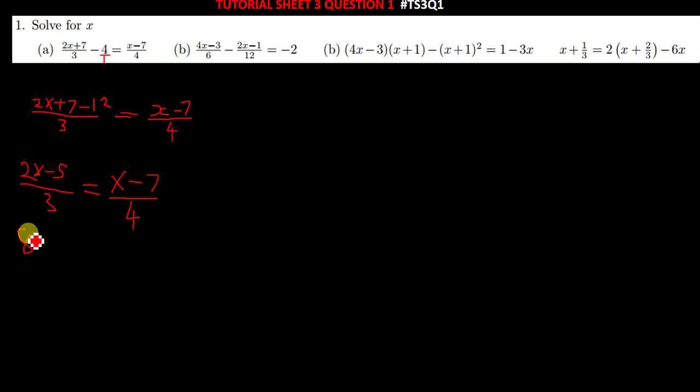When you cross multiply here, you get 8x minus 20, being equal to 3x minus 21. Here, what happens now is you just pair the like terms. So when you take this 3 to the other side of the equal sign, you're going to have 8x minus 3x. And then, when you take this 20 to the other side, you're going to have plus 20.